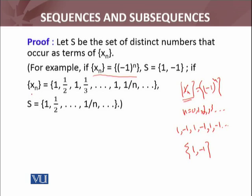Similarly, in another example, if the sequence XN is defined as 1, 1/2, 1, 1/3, and so on, then the set S of distinct numbers of that sequence is S = {1, 1/2, 1/3, ..., 1/n, ...}. So from the sequence we are building a set S of distinct numbers.